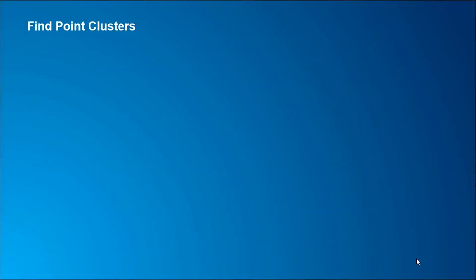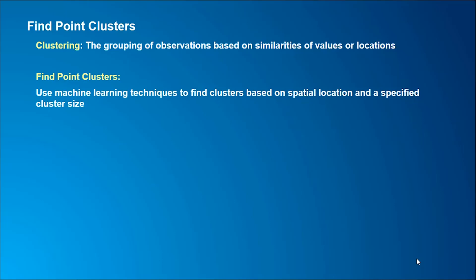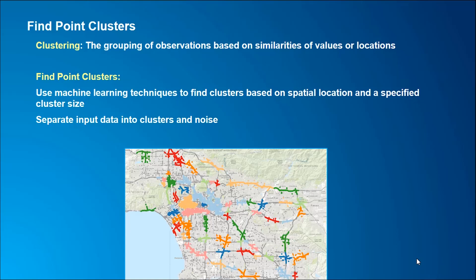First, the Find Point Clusters tool, which is a clustering method. When we talk about clustering, we refer to the technique that groups observations based on similarities of values or locations. The Find Point Clusters tool groups features based on locations and user-specified cluster size. It is a density-based clustering method and uses machine learning algorithms to find clusters based on the spatial distribution of a set of points. It separates input data into clusters and noise.